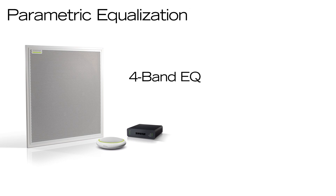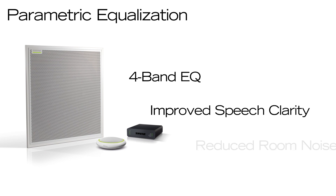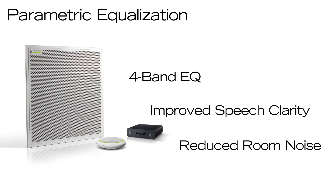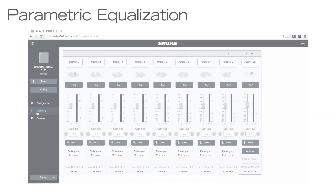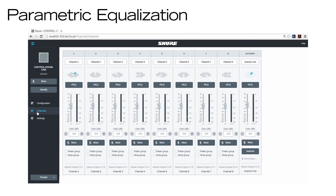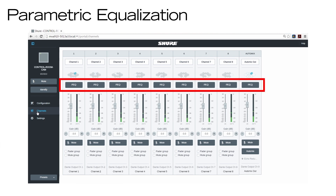Both microphones and audio network interfaces feature 4-band parametric equalization to customize frequency response for improved speech clarity and reduced room noise. The MXA310, MXA910, and the audio network interfaces have a separate equalizer for each channel.